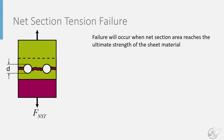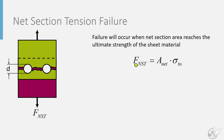Now let's develop our simplified models for failure modes. We will start with net section tension failure, which occurs when the stress in the net section — the smallest cross section of the plate — reaches the ultimate strength of the sheet material. Using the plasticity assumption, the stress is uniform and equal to the ultimate strength, so we can define that force as the net section area times the tensile ultimate strength of the material.